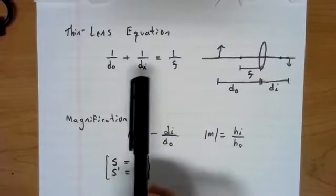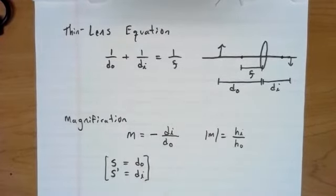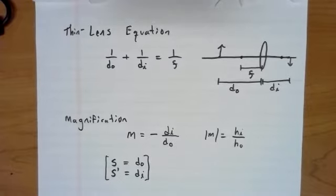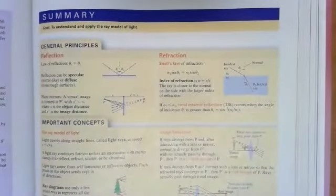Okay, sign conventions. So yes, any of these variables, DO, DI, F, and M can be positive or negative. Again, I'm using the Knight textbook. So I'm going to show you my favorite little cheat sheet from Knight.